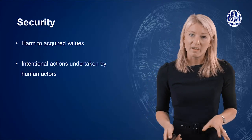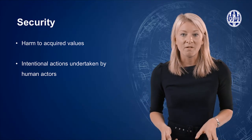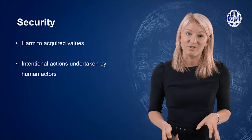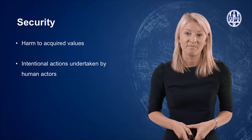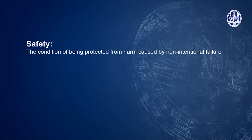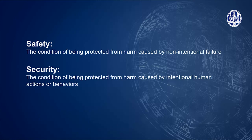Let's do a short recap. What are the definitions of safety and security? Safety is the condition of being protected from harm or other non-desirable outcomes caused by non-intentional failure. Security is the condition of being protected from harm or other non-desirable outcomes caused by intentional human actions or human behavior.